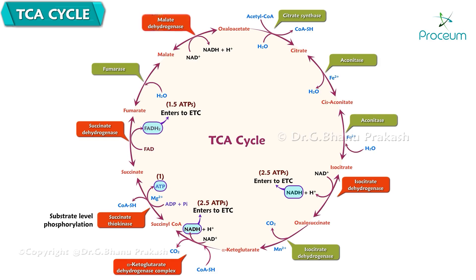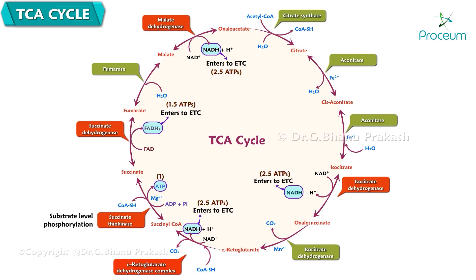Malate dehydrogenase produces 1 NADH entering the ETC, generating 2.5 ATPs. Total number of ATPs per turn of the TCA cycle is 10 ATPs.